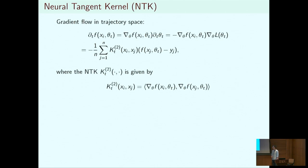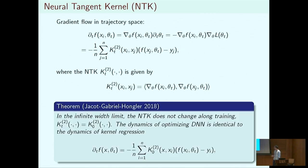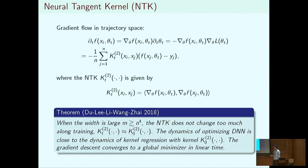The key insight in many recent papers is that instead of studying the dynamics in the parameter space, they study the dynamics in the trajectory space. In the trajectory space, the derivative of f is governed by the Neural Tangent Kernel K_t. Unfortunately, this is not a closed equation because K_t is not determined by the trajectories. However, the key observation is that if the neural network is wide enough, K_t doesn't change much along training, so you can replace it by K_0. Then this becomes a closed system we can analyze.